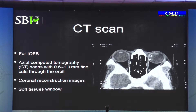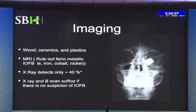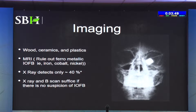For CT scan when a foreign body is suspected, use 1mm or 0.5mm cuts with coronal reconstruction images. For non-metallic foreign bodies, the soft tissue window is very important. If no foreign body is suspected, a B-scan and digital X-ray should suffice and you do not need CT for all trauma cases. For wood, ceramic, and plastic foreign bodies, MRI is required, but metallic foreign body must be absolutely ruled out first and no pacemakers or metallic implants should be present.